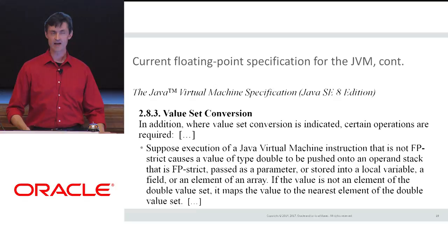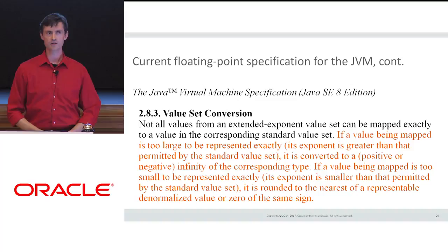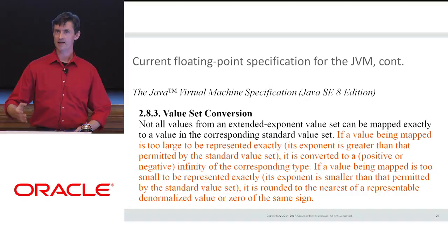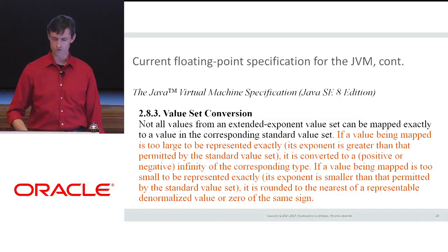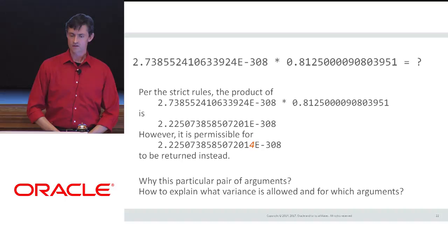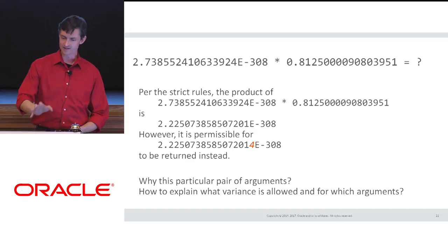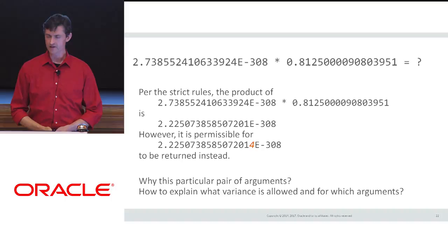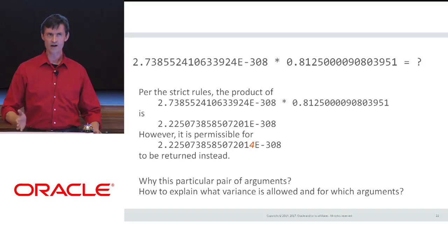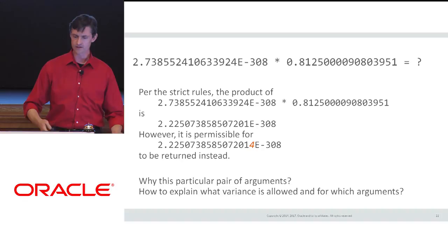What happens when you have this value set conversion? You're converting from one set of numerical values to another, and there can be a difference — a rounding operation occurs, so some change is being made to a value computed by the program. I managed to make a HotSpot display this behavior: if you multiply two carefully chosen floating-point values together, you can get two different answers. That's what we'll explain in the rest of the talk.